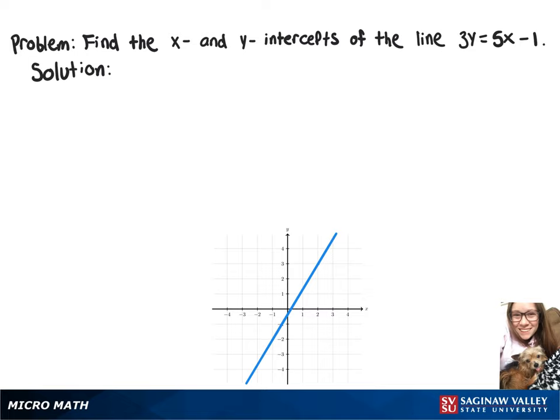We want to find the x and y intercepts of the line 3y equals 5x minus 1. So we'll start with the x-intercept, and we'll sub in 0 for y. So 3 times 0 equals 5x minus 1.